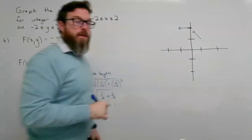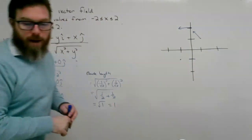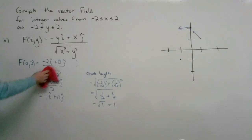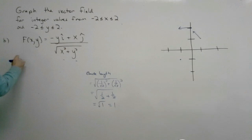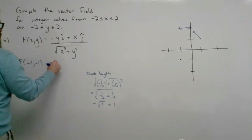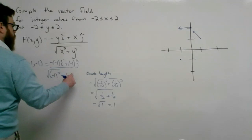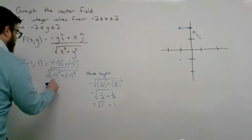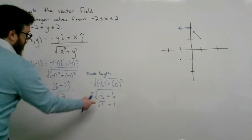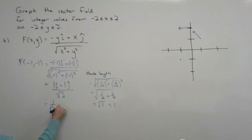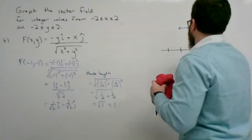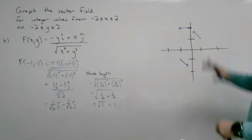Let's try (-1, -1). At x = -1, y = -1, this gives -(-1)i + (-1)j all over √((-1)² + (-1)²), so 1i - 1j all over √2. It also has length 1, and you can see we're moving positive in x and negative in y.